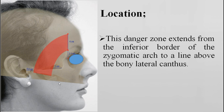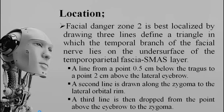Facial danger zone 2 extends from the inferior border of the zygomatic arch to a line above the lateral brow. This zone is best localized by drawing three lines that define a triangle in which the temporal branch of the facial nerve lies. A line from 0.5 cm below the tragus to 0.2 cm above the lateral eyebrow, a second line along the zygoma to the lateral orbital rim, and a third line dropped from the point above the eyebrow to the zygoma.